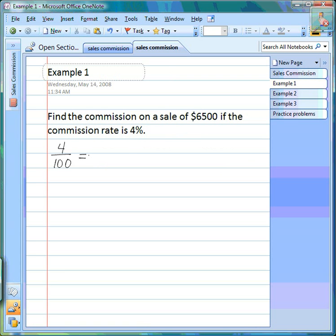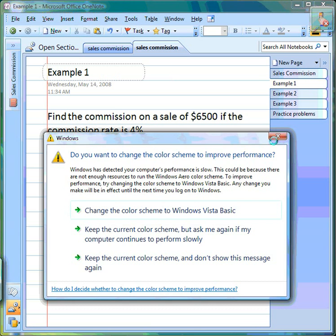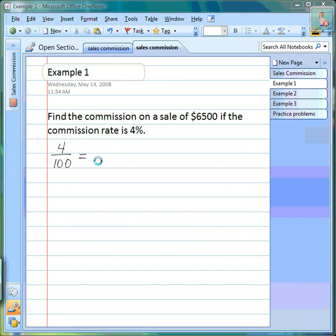Choose a proportion. You start off with the percentage. Percentages are always over 100, and then the total sale was $6,500, so $6,500 goes on the bottom. Put your variable on top, set it up to solve, and your answer is $260.